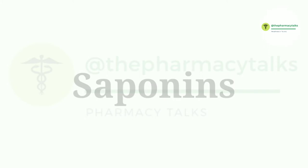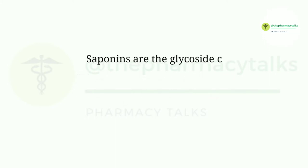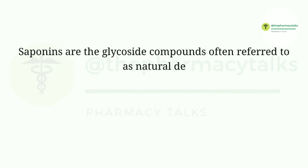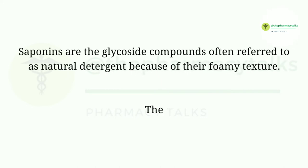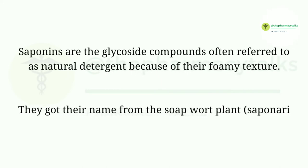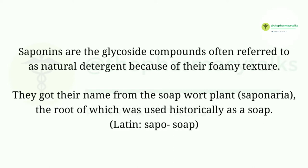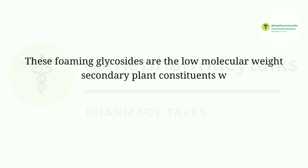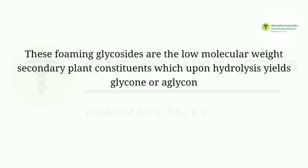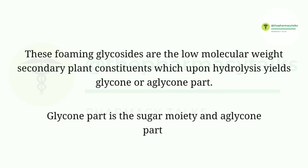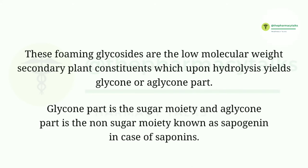Saponins are glycoside compounds often referred to as natural detergent because of their foamy texture. They got their name from the soap wort plant, Saponaria, the root of which was used historically as a soap. These foaming glycosides are low molecular weight secondary plant constituents, which upon hydrolysis yield a glycone or aglycone part. The glycone part is the sugar moiety and the aglycone part is the non-sugar moiety, known as sapogenin in case of saponins.